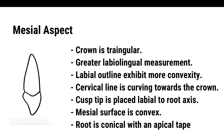The cervical line curves towards the crown with a greater curvature on the mesial side than distal. The cusp tip is placed labial to the root axis. The mesial surface is convex on all aspects except for a shallow concavity between the contact area and the cervix. The root is conical with an apical taper; the mesial surface of the root has a deep developmental depression running cervico-apically.